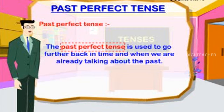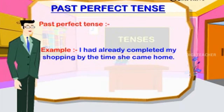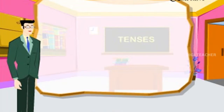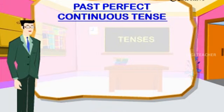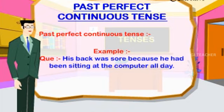Past Perfect Tense: used to go further back in time when already talking about the past; makes clear something had already happened. Example: 'I had already completed my shopping by the time she came home.' Past Perfect Continuous Tense: used for longer situations that continued up to a moment in the past. Example: 'His back was sore because he had been sitting at a computer all day.'